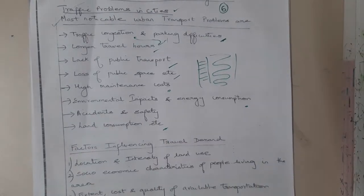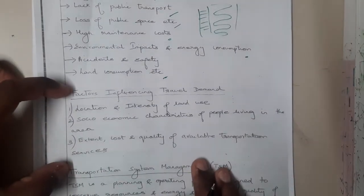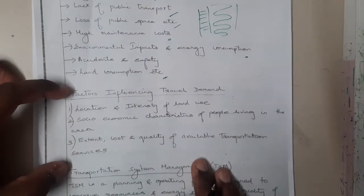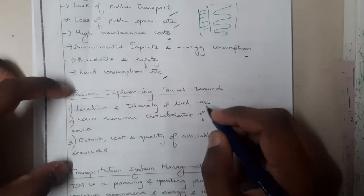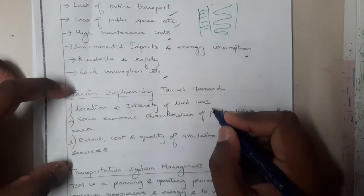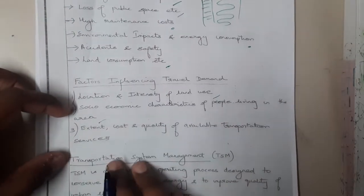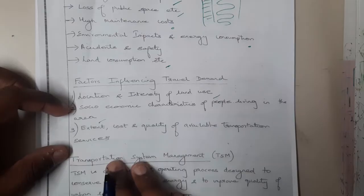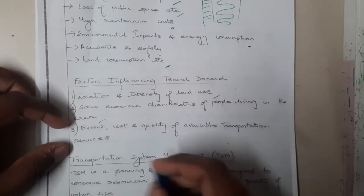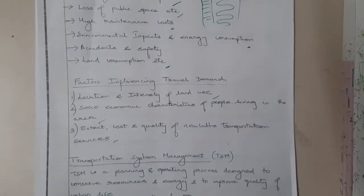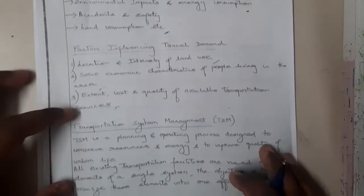Now let us look at the factors influencing travel demand. The key factors are: location and intensity of land use, socioeconomic characteristics of people living in that area, and the extended cost, quality, and availability of transport. These are some of the main factors which influence traveling demand.